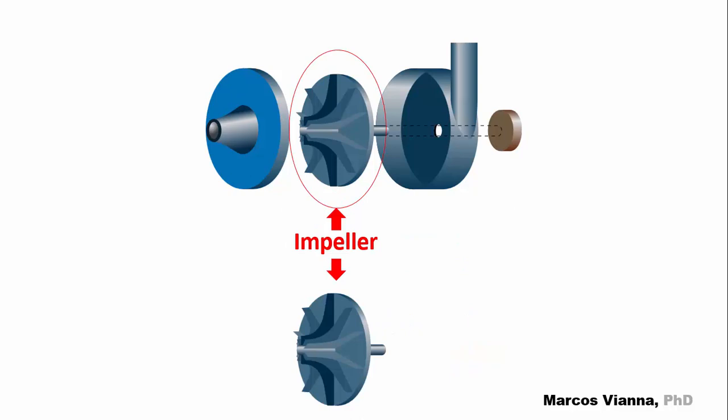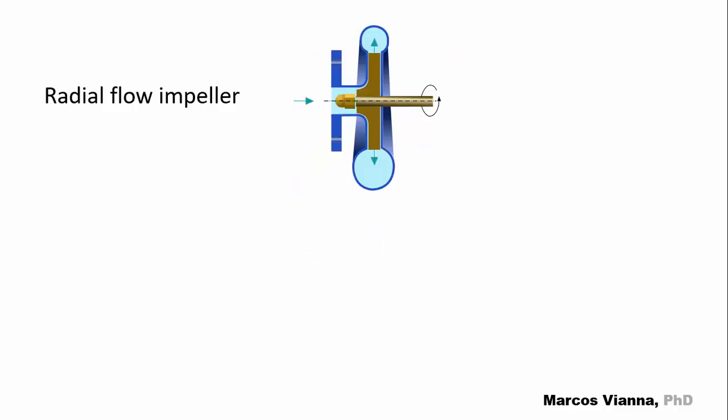The impeller has different configurations depending on the flow and the head values to be supplied. In most cases, it has this configuration. It's a radial flow impeller.